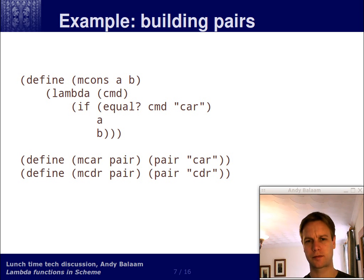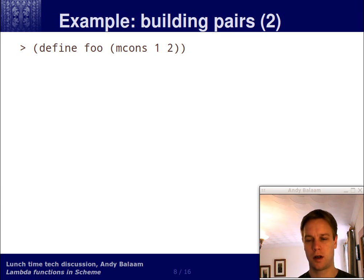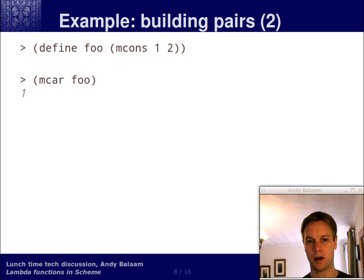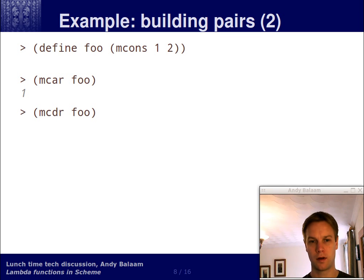So why would we do all this? Well, maybe the names of these procedures will have helped you predict. Let's define a symbol called fu, which is the result of mcons 1, 2. Then let's ask for the mcar of fu — we get back 1, because mcar passes in the 'car' string, which gets us into the first part of the if, which gets us back A from the original definition. In this case A is 1, because that's the first argument passed into mcons. And mcdur of fu is 2.